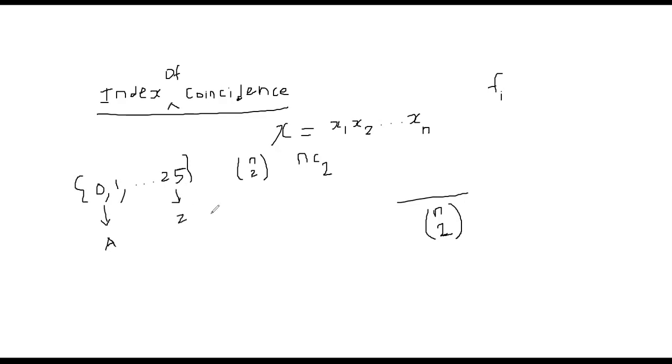So what we are going to do is we are going to measure how many times A occurs, how many times B occurs, how many times C occurs and so on in this given string. So that becomes the frequency. Frequency is just measure of how many times certain things repeat.